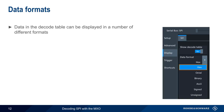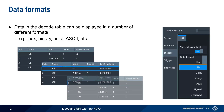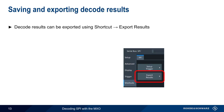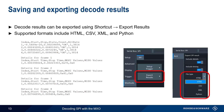Data in the MXO's decode table can be displayed in a variety of formats, including hexadecimal, octal, binary, ASCII, etc. The format can be changed both during and after decoding. Decoded results can be exported by choosing 'Export Results' from the Shortcuts menu. The supported export formats include HTML, CSV, XML, and Python. The CSV data shown here gives a good example of the type of data included in the export — timing information as well as the decoded values for each individual frame.